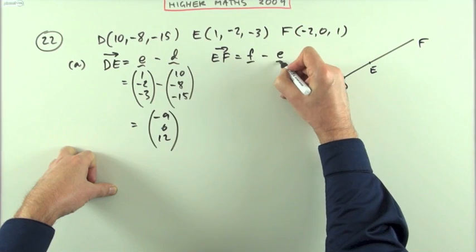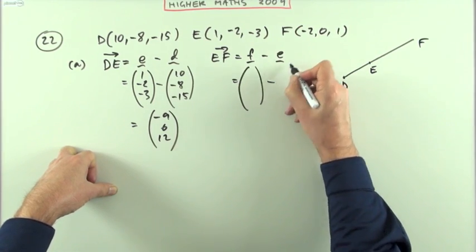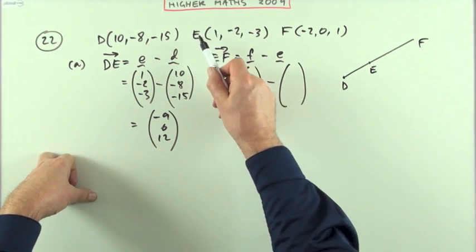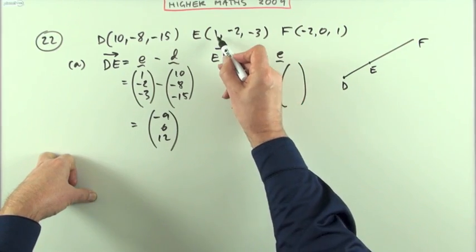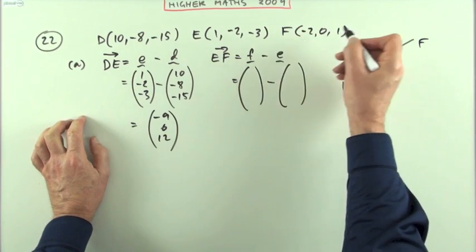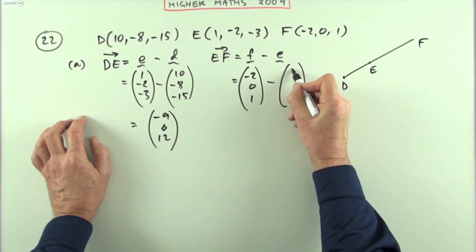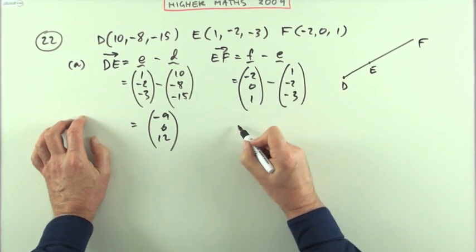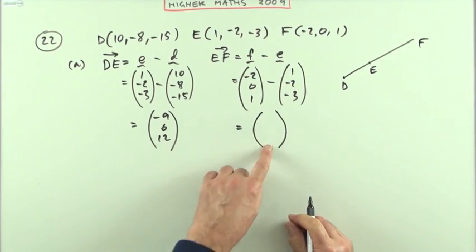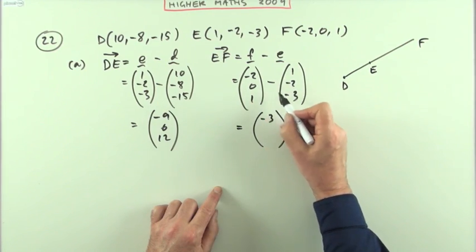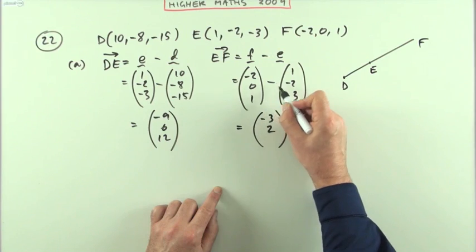Doing the same with EF, that should be F minus E. What's the displacement EF? What does it take to move from point E to point F? You can see yourself, 1 to -2 should be 3 backwards. So set it out arithmetically here: (-2, 0, 1) take away (1, -2, -3).